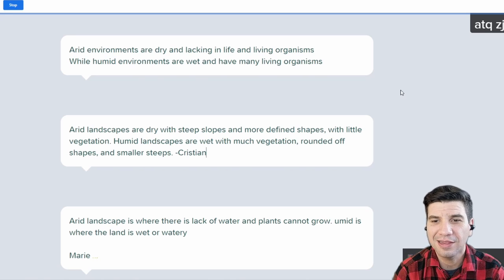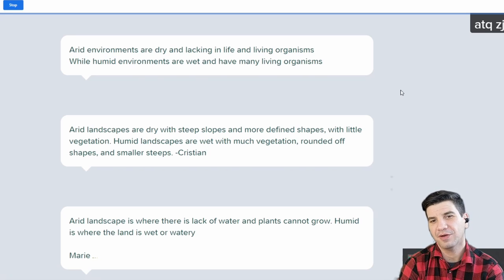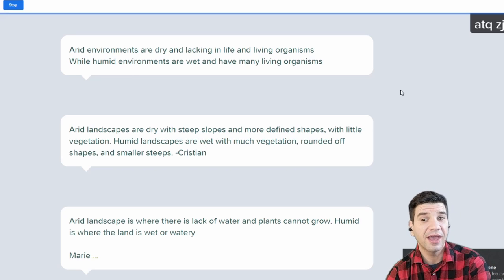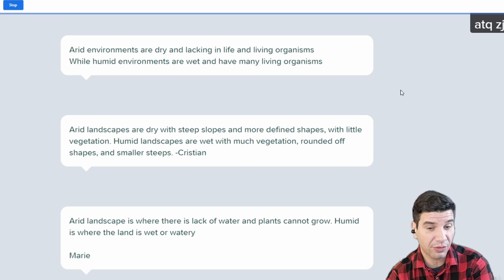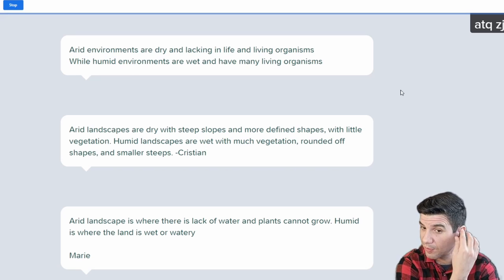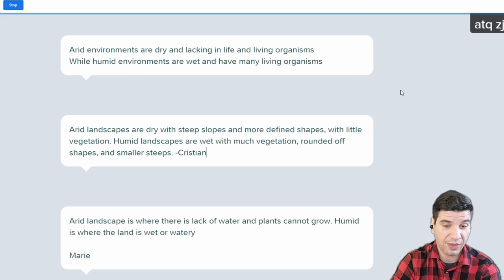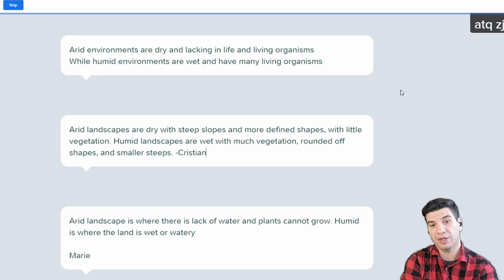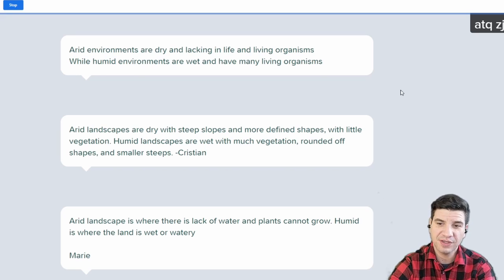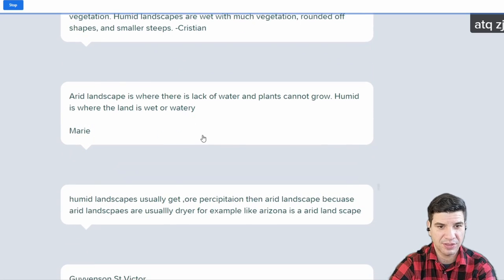Arid environments are dry and lacking in life and living organisms, while humid environments are wet and have many organisms. Yes, organisms are actually very important here, especially plants, because they're going to hold back the rainwater and the sediment and keep everything from washing away. Christian said that arid landscapes are dry, steep slopes, more defined shapes. That's true. Little vegetation. Humid landscapes are wet, much vegetation, rounded shapes. Awesome. Couldn't have said it better myself.